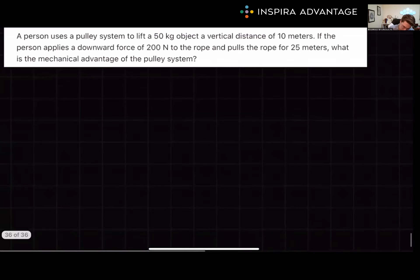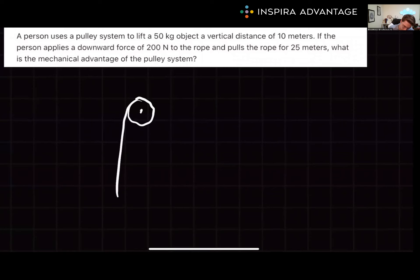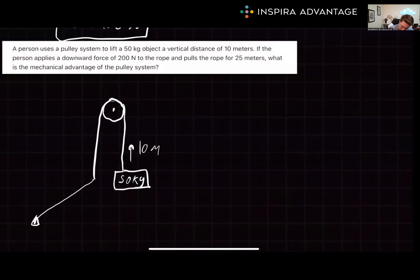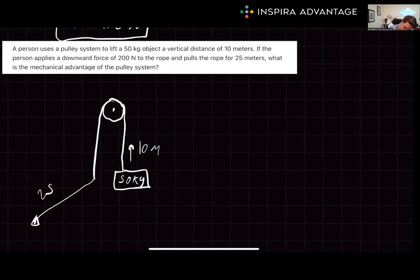Just like last time, I really recommend drawing out a picture first. I'm going to draw a little pulley, put my ropes down. We're lifting some 50 kilogram object. This is going to go up to 10 meters and they're pulling the rope. It must be at some angle because they're going for 25 meters with a downward force component of 200 newtons.